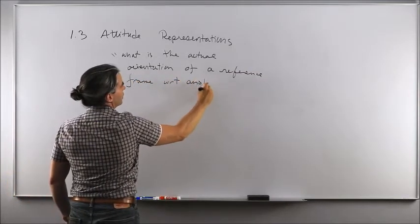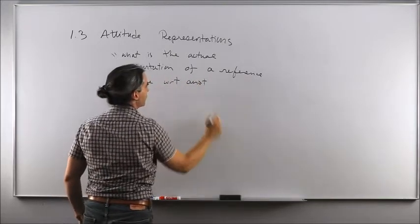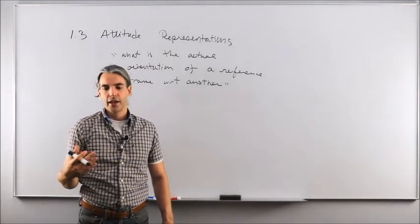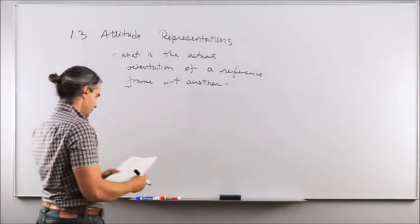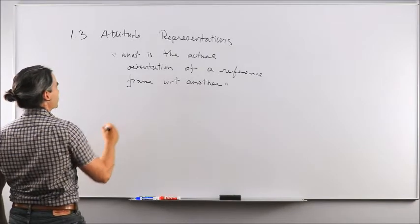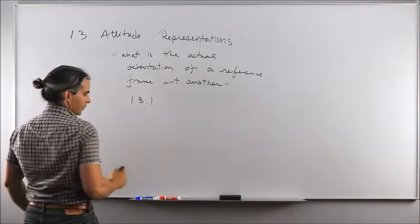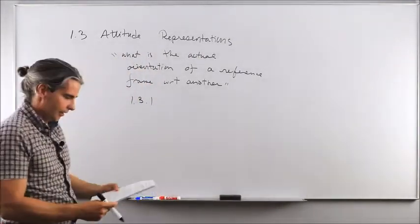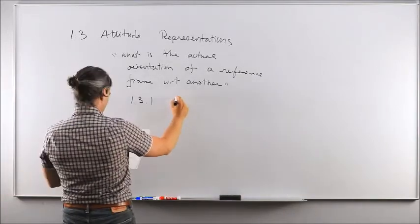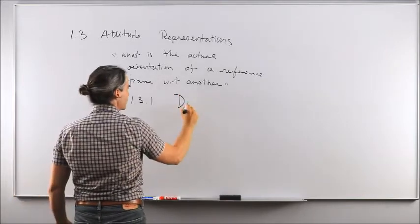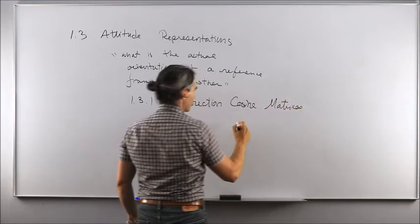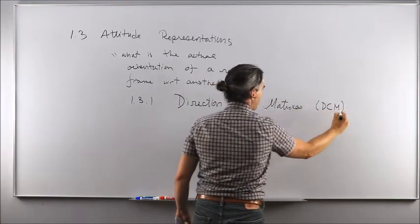Section 1.3: attitude representations — how to answer the question: what is the current orientation of a reference frame with respect to another one? The first way to answer that question is through the use of direction cosine matrices, or DCM.